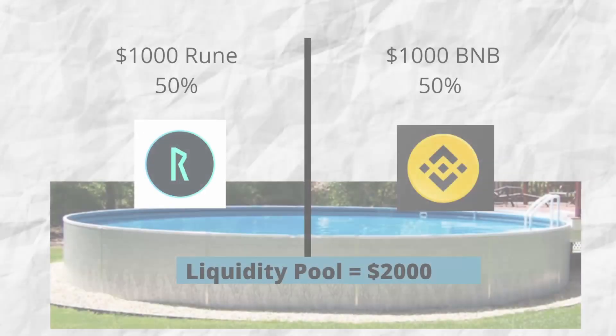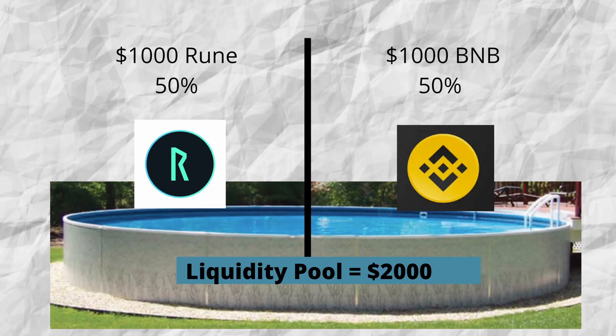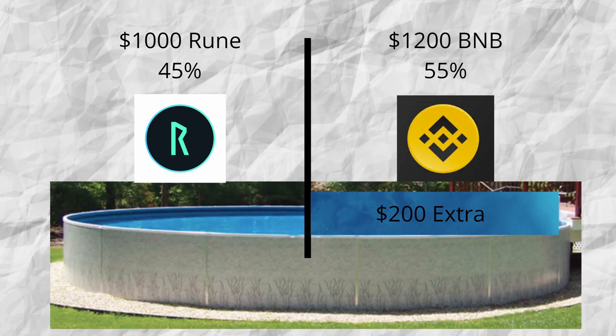So let's look at an example. Here is my liquidity pool made up of Rune and BNB — a 50-50 split of $1,000 each side. I've simplified this for the purposes of explaining the concept. In crypto, price is volatile and it sometimes changes. So let's say that the BNB price goes up. The liquidity pool is no longer balanced at a 50-50 split. Something like BEPSWAP is known as an automated market maker, or AMM, and they are programmed to hold and maintain a 50-50 split of the liquidity pool. Sometimes in other AMMs there are other ratios, but we're just going to be working with 50-50 for now.